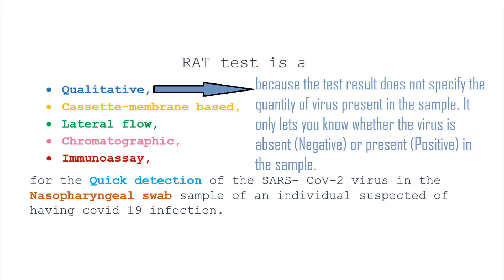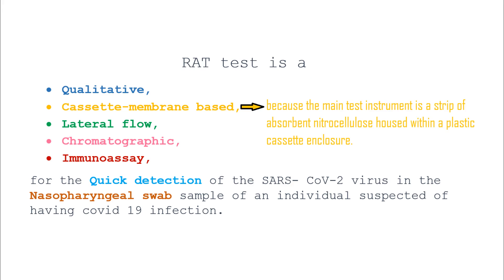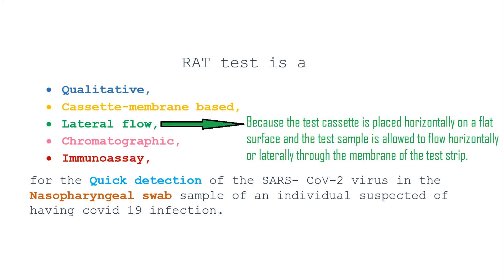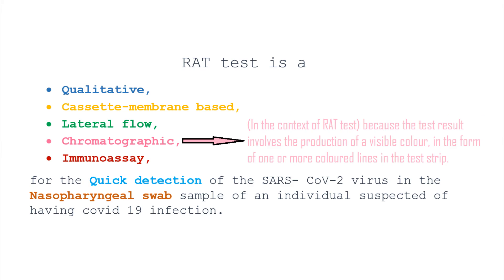It is a cassette membrane based test because the main test instrument is a strip of absorbent nitrocellulose housed within a plastic cassette enclosure. It is a lateral flow test because the test cassette is placed horizontally on a flat surface and the test sample is allowed to flow horizontally or laterally through the membrane of the test strip.